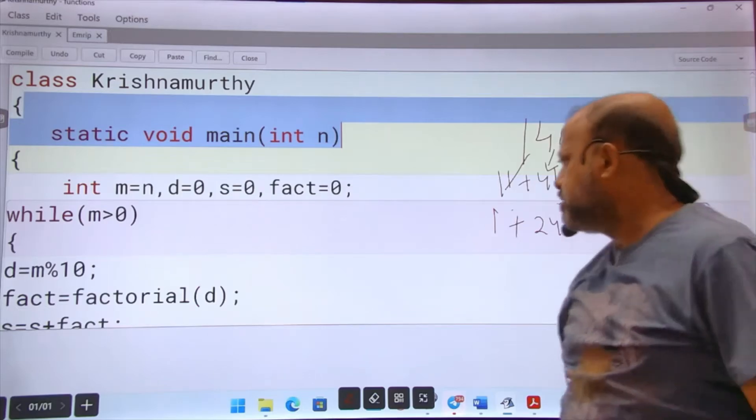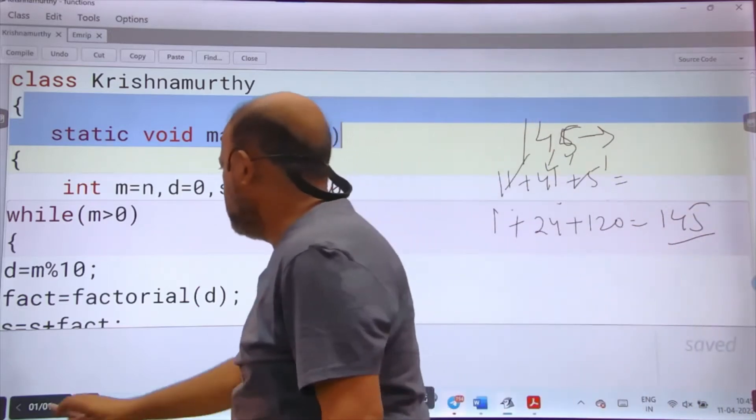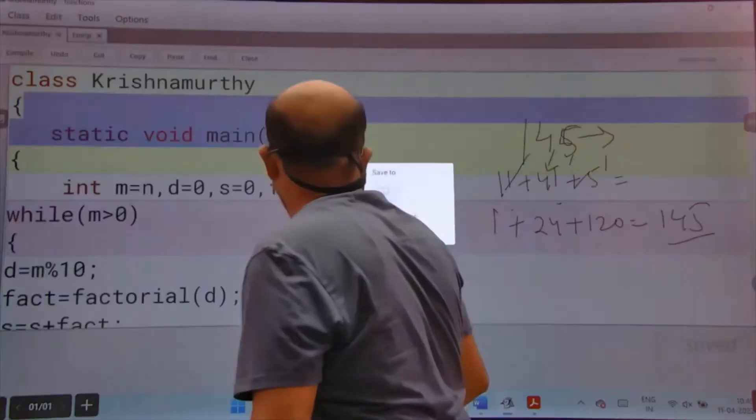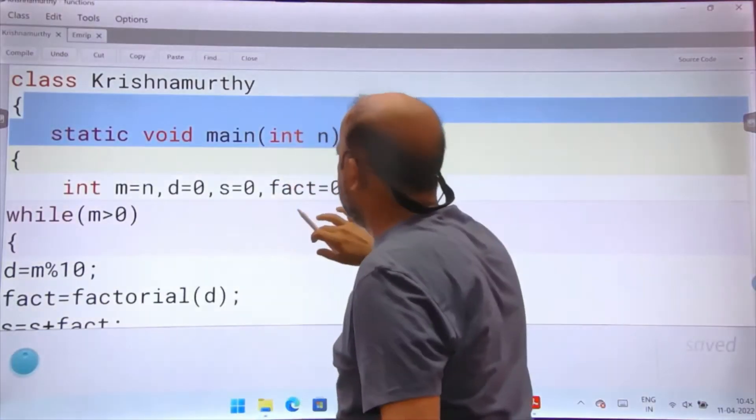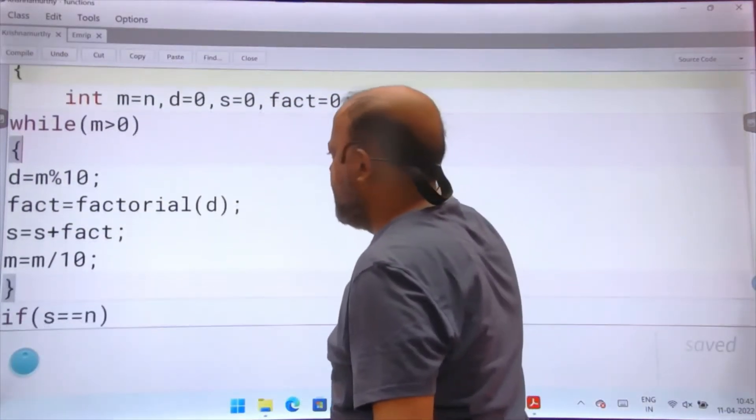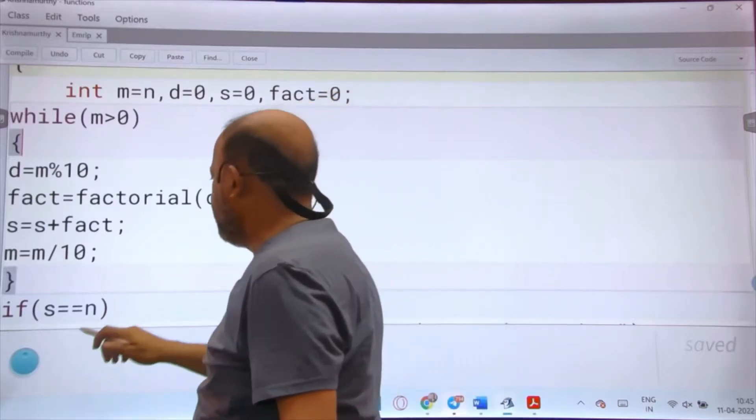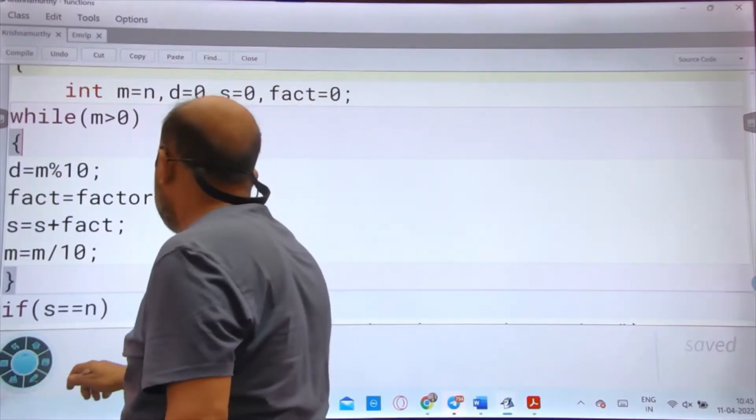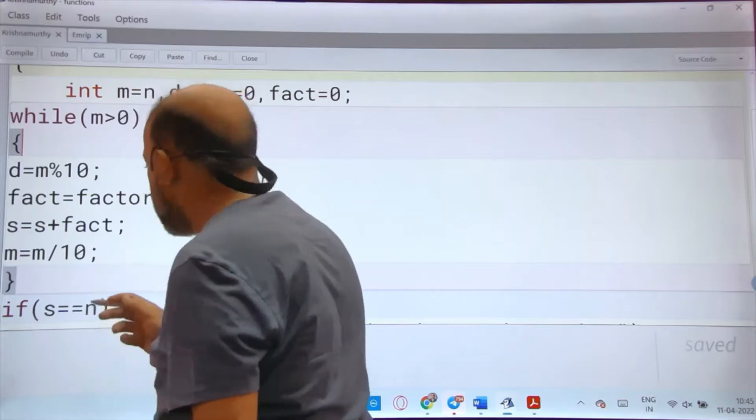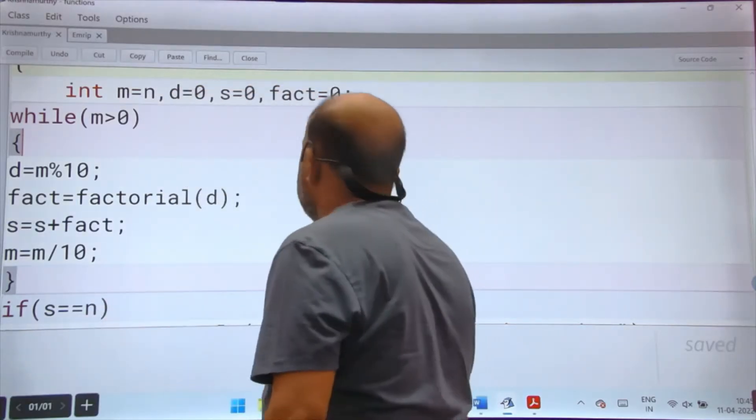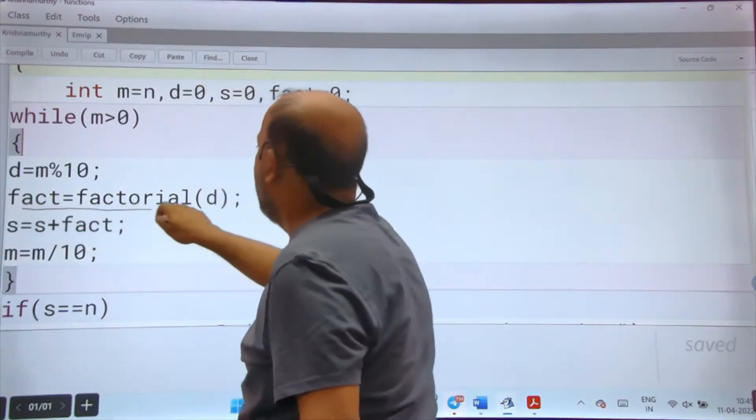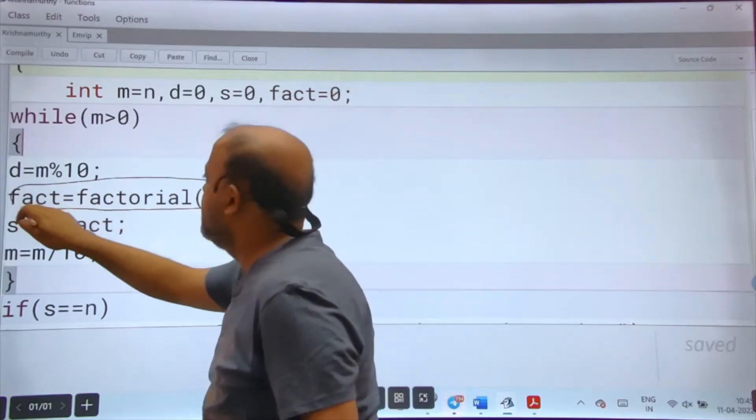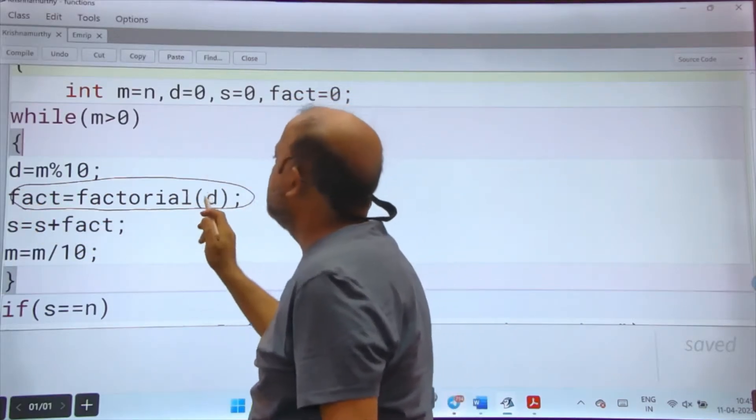Now what I have done, let me make you understand. If you can see, I have taken a number. The new thing here is we have called a function which is returning values. Previously it was not like that. You can see this line: fact equals factorial d. This returns the factorial of any digit.